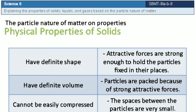Let us now discuss how these properties are explained by the particle nature of matter. First, solids have definite shape and volume because the attractive forces holding the particles together are strong enough to hold them fixed in their places. Second, solids cannot be easily compressed because the spaces between particles are very small.